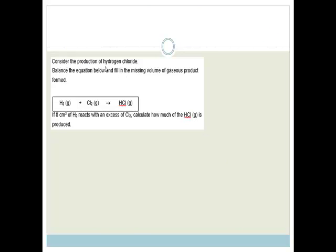Right, moving on. Now it says consider the production of hydrogen chloride. So you've got hydrogen plus chlorine forms hydrogen chloride. Then it says balance the equation below and fill in the missing volume of the gaseous product formed. So we've got two hydrogens and two chlorines. So it's pretty easy to balance. It's just going to be 2 HCl. So the equation is H2 gas plus Cl2 gas forms 2 moles of HCl gas.